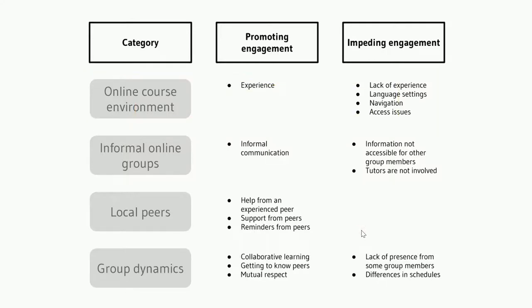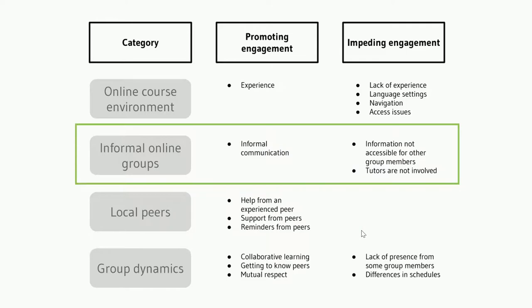The interview reveals that some groups chose to establish informal learning groups employing other communication channels that were more flexible. For example, WhatsApp was often mentioned. Small groups would often use this as a platform to discuss course materials synchronously. Moreover, being able to discuss informally was very motivating for students and gave them confidence before they would go and post something on the course platform.